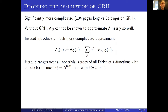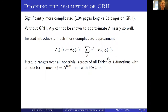These zeros have real part greater than or equal to 0.99. On GRH there are no such zeros, so this degenerates back to λ_Q. But unconditionally, we cannot show there are no such zeros — all we can do is get a bound on how many there are.